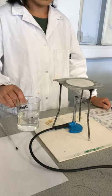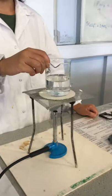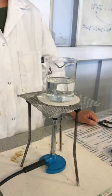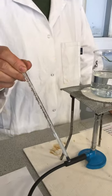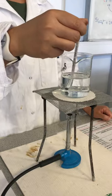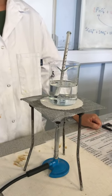Now place this beaker on top of the ceramic gauze and put an alcohol thermometer inside the beaker. Make sure the beaker is at the center of the gauze.